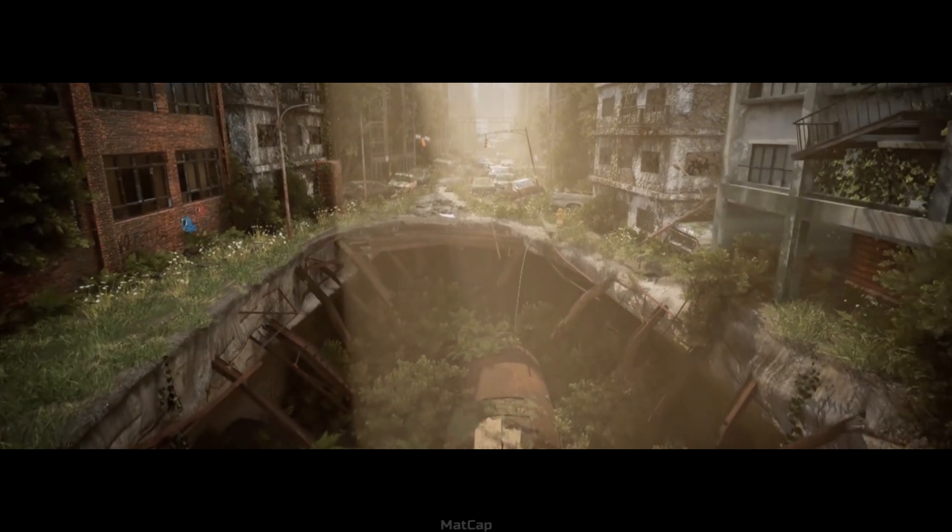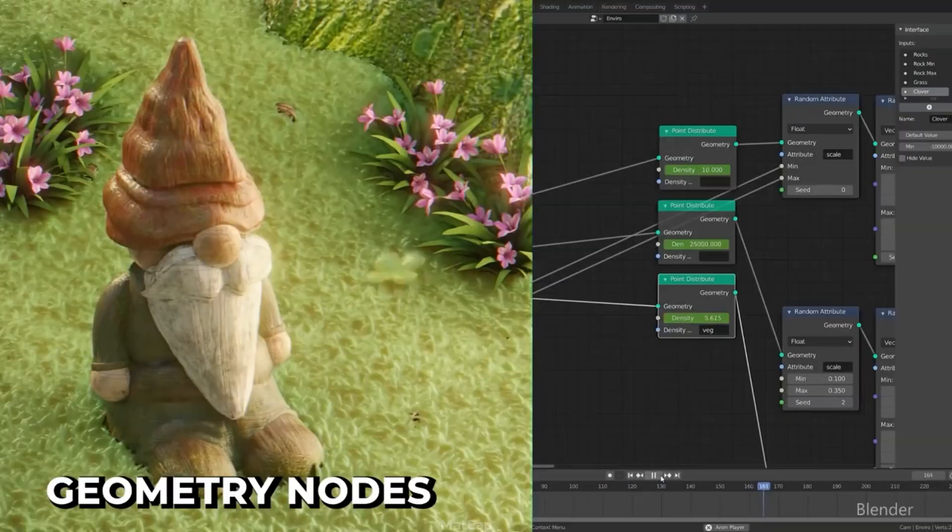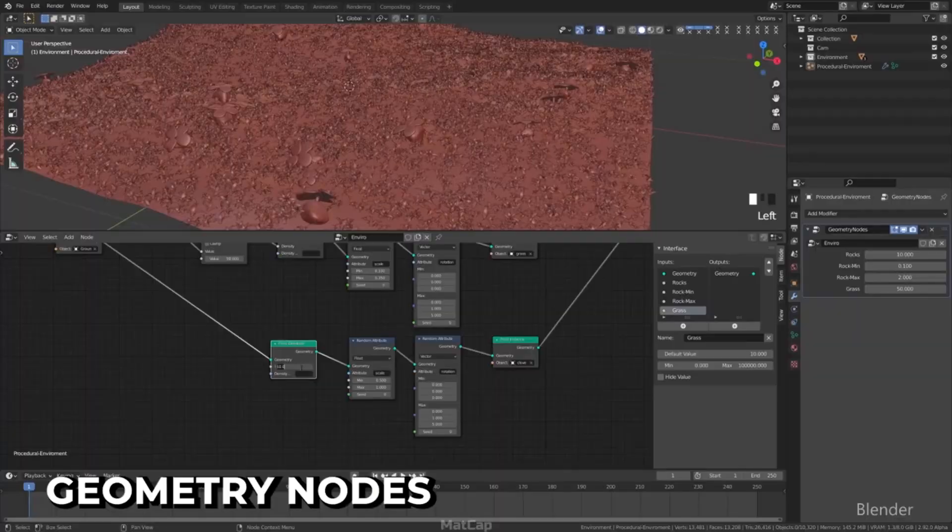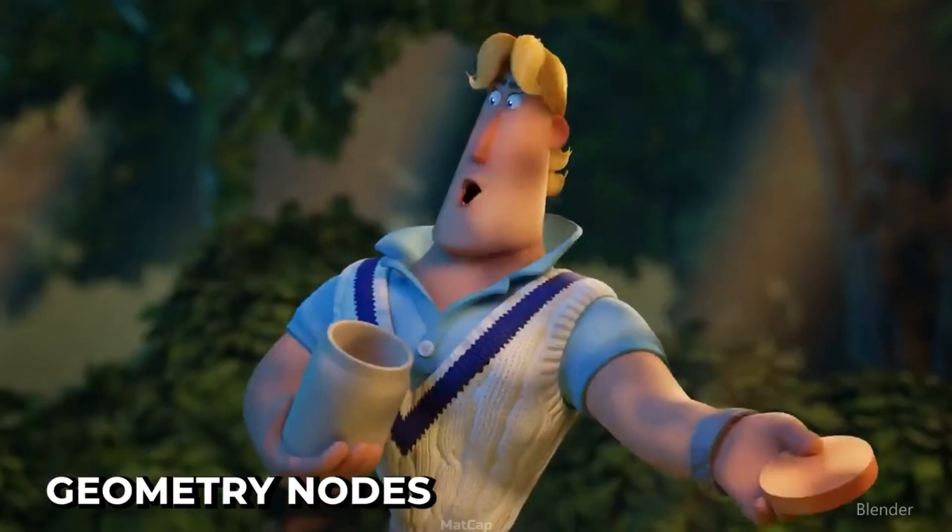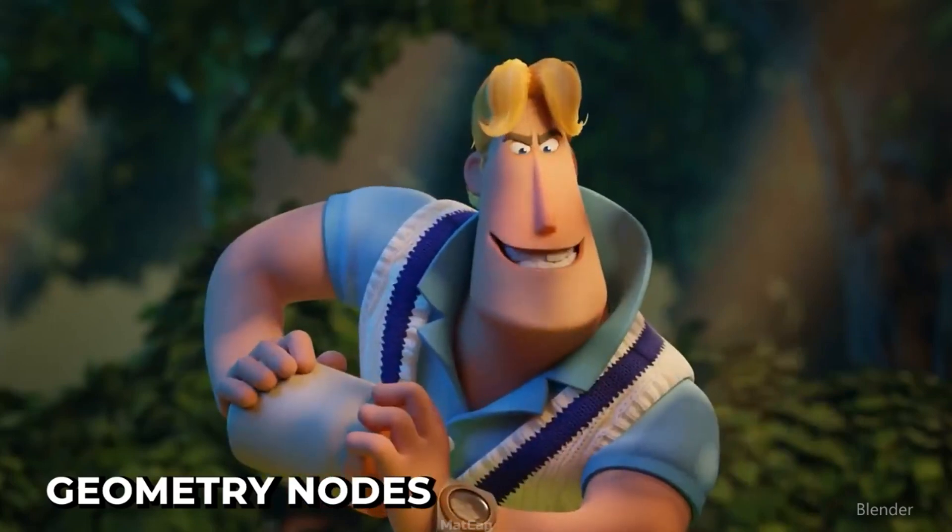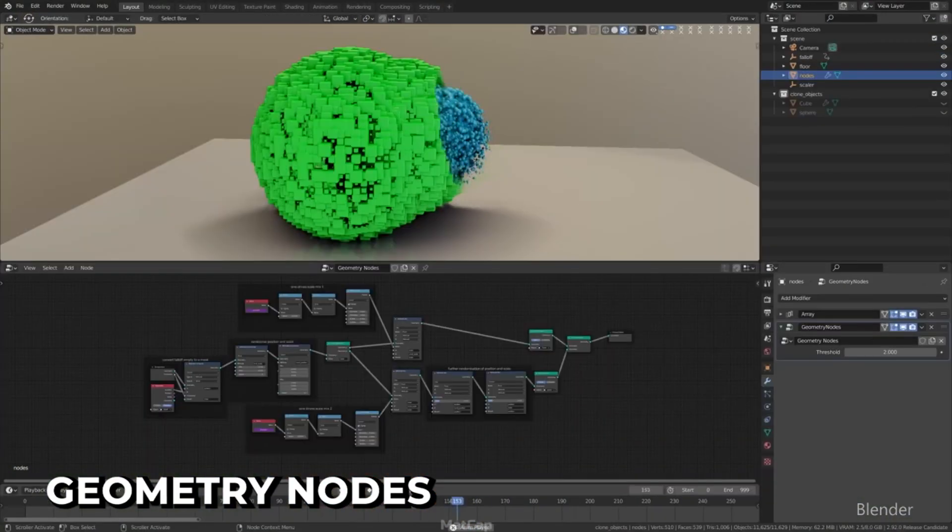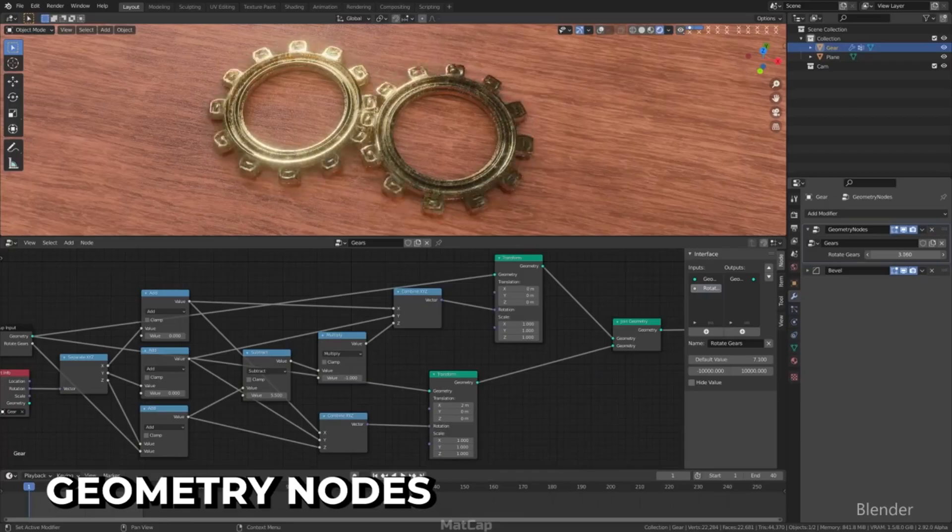And now let's continue our video. Geometry Nodes were first introduced in version 2.92 and underwent significant changes that are still relevant in version 3.0. At the time most existing nodes were rewritten and many new ones were added.